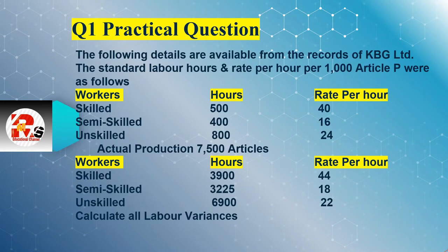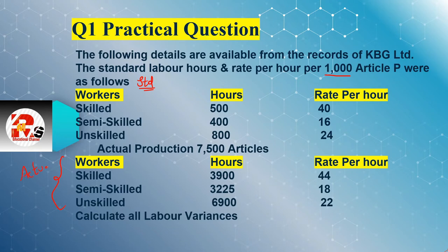The following details are available from the records of KBJ Ltd. The standard labor hours and the rate per hour for 1000 articles are given. So for 1000 articles, the information is given here about standard workers. There are 3 types of workers — this is the standard information. The types are skilled, semi-skilled, and unskilled.